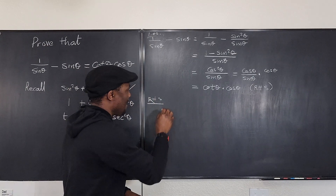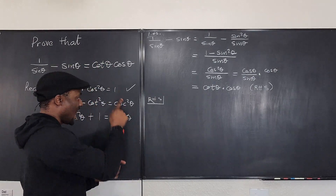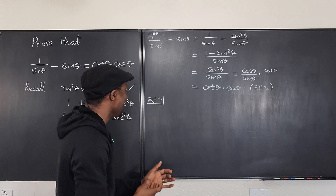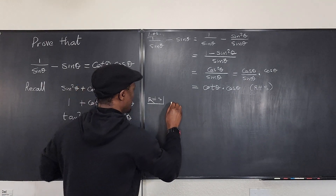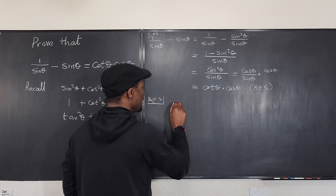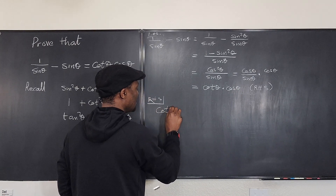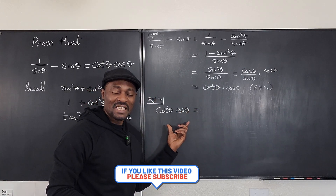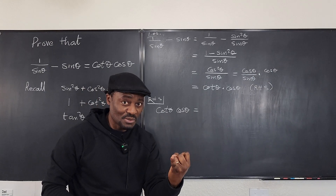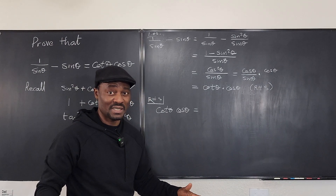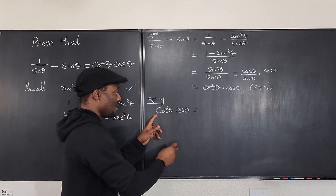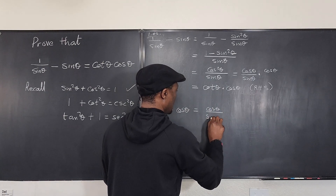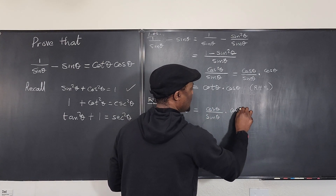Now we're starting from the right-hand side and want to change it to match the left. Remember, we still have to pass through the Pythagorean identity. From the right-hand side we have cotθ · cosθ. Whenever you see anything not written in terms of sine or cosine, rewrite it immediately. So this becomes (cosθ/sinθ) × cosθ, and I put the second cosθ over one.